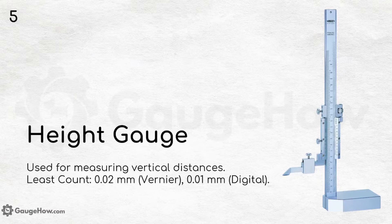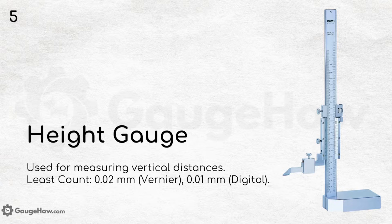Height gauge. Used for measuring vertical distances. The least count is 0.02 mm for vernier type, and 0.01 mm for the digital type.